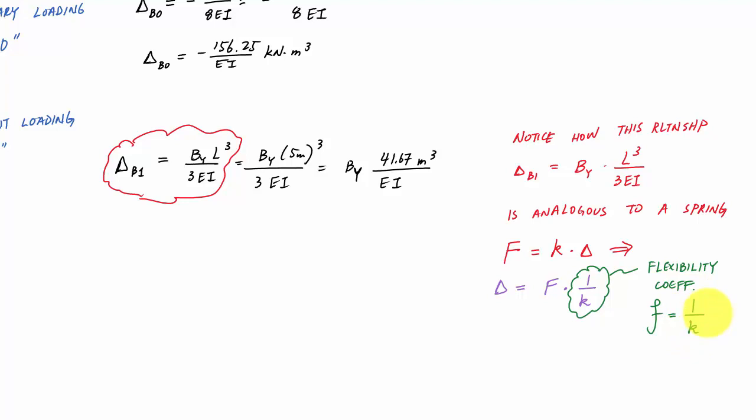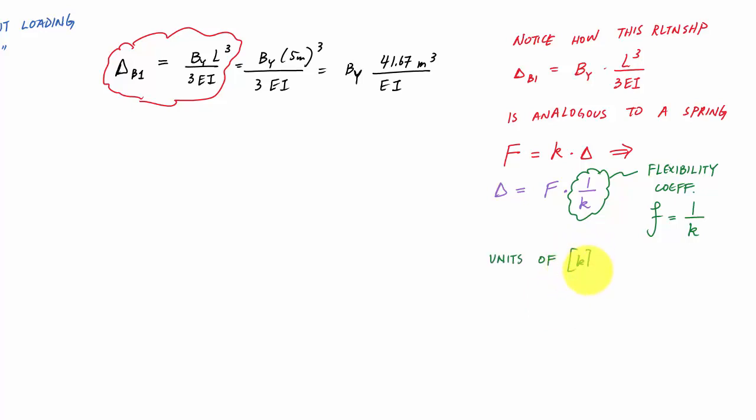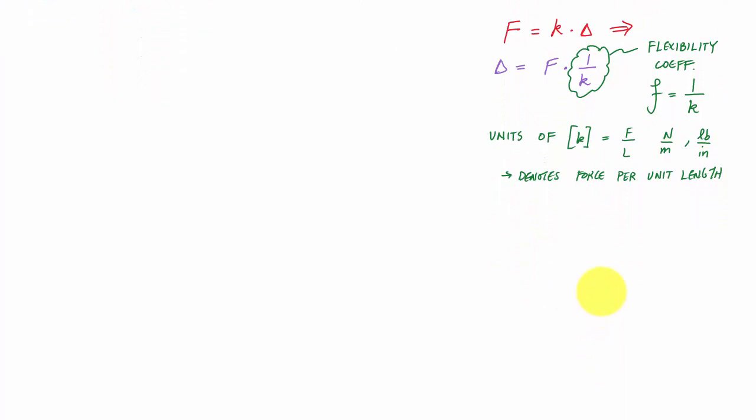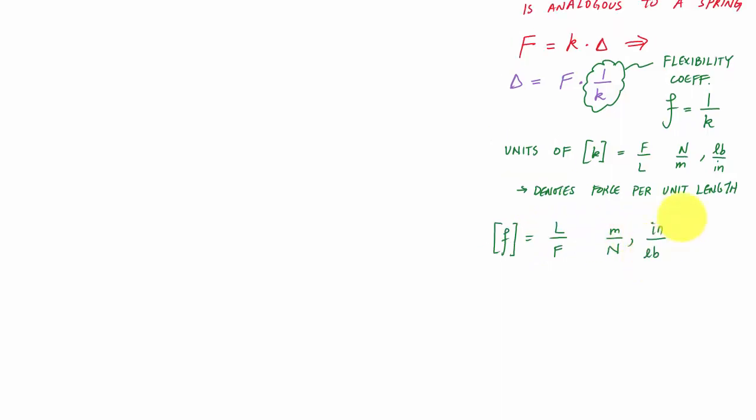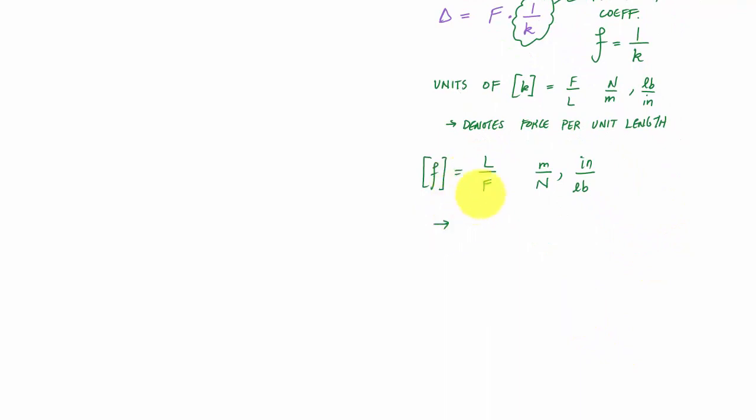If I look at the units of this stiffness coefficient, you know from basic physics that the units of the stiffness coefficient in units of force over length, things like newton per meter or pounds per inch. The way that this is explained is it denotes the force per unit length or per length. And so similarly, the flexibility coefficient, f, has units of length over force, which is the same as something like meter per newton or inch per pound. And this, the flexibility coefficient, basically indicates displacement per unit force. I have basically a displacement per pound or per force.